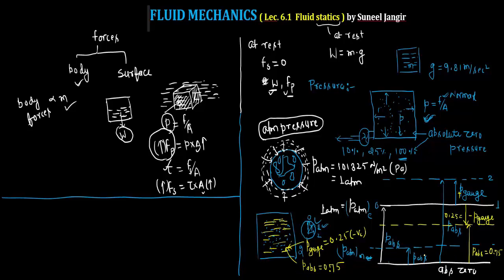To summarize the pressure scale: the state when there are no particles and pressure is absolute zero is the absolute zero line. Above that is atmospheric pressure, which is 1 atm. Any pressure measured from absolute zero is absolute pressure. Taking the atmospheric line as the reference, pressure above it is positive gauge pressure and pressure below it is negative gauge pressure, also called vacuum pressure.